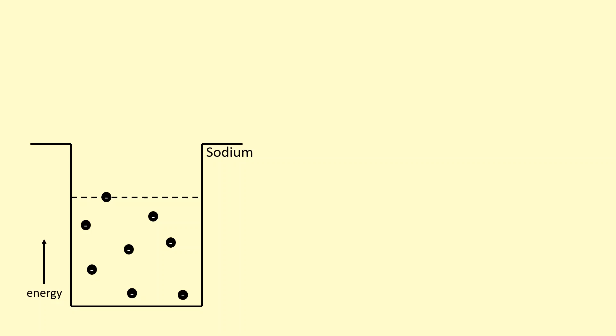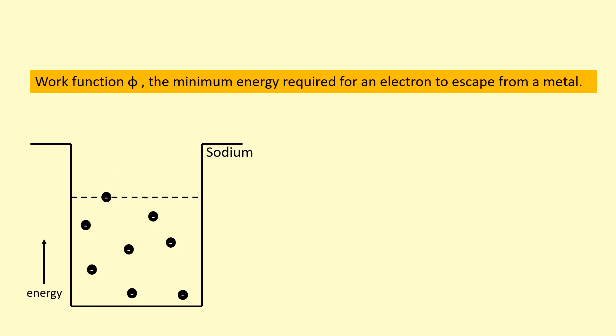An analogy you can use to understand the photoelectric effect is to think of the metal as a well. Here we've got the sodium metal with electrons inside at different depths. The depth of the well represents the energy. This electron over here has the most energy, but even this electron needs a minimum energy to escape. This minimum energy required to escape is called the work function.